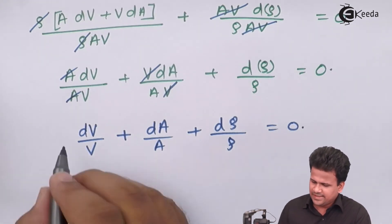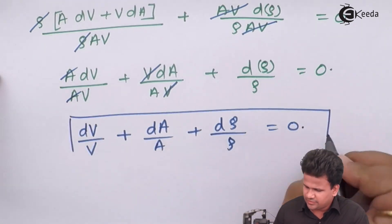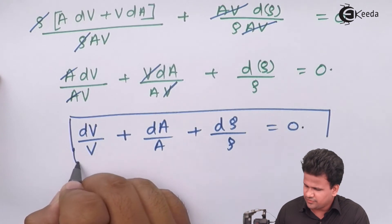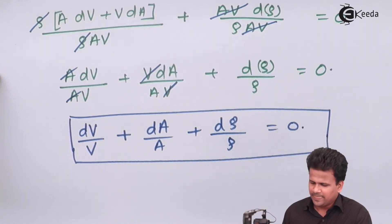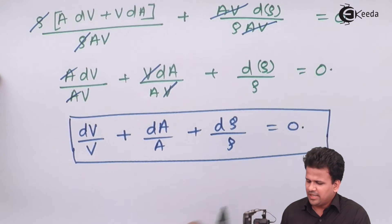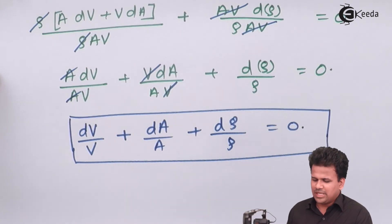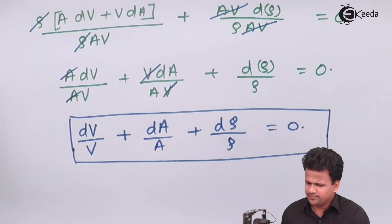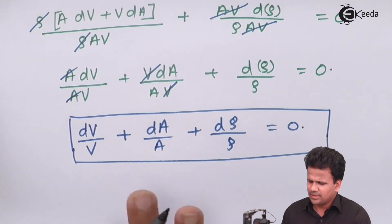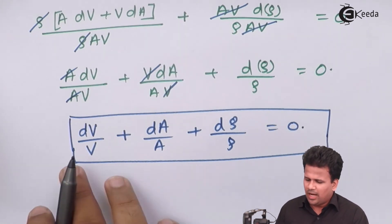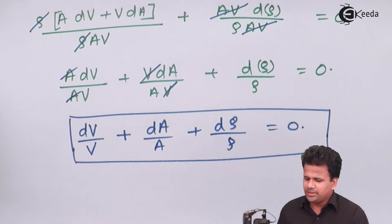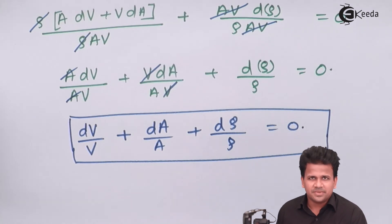This is the continuity equation for a compressible fluid flow. We can integrate this to calculate the flow parameters. I hope you have understood how to derive the continuity equation for a compressible fluid flow. Thank you.